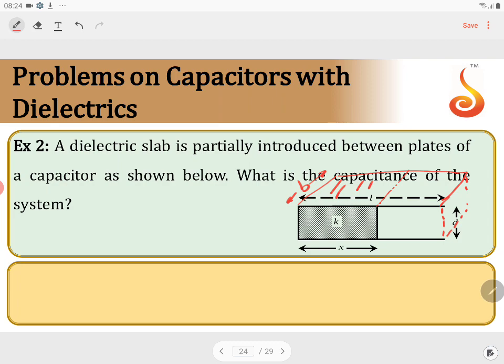But the area of the dielectric capacitor - this is X, right? This is B, so XB. The area of this is XB. The area of the air capacitor is L minus X into B.